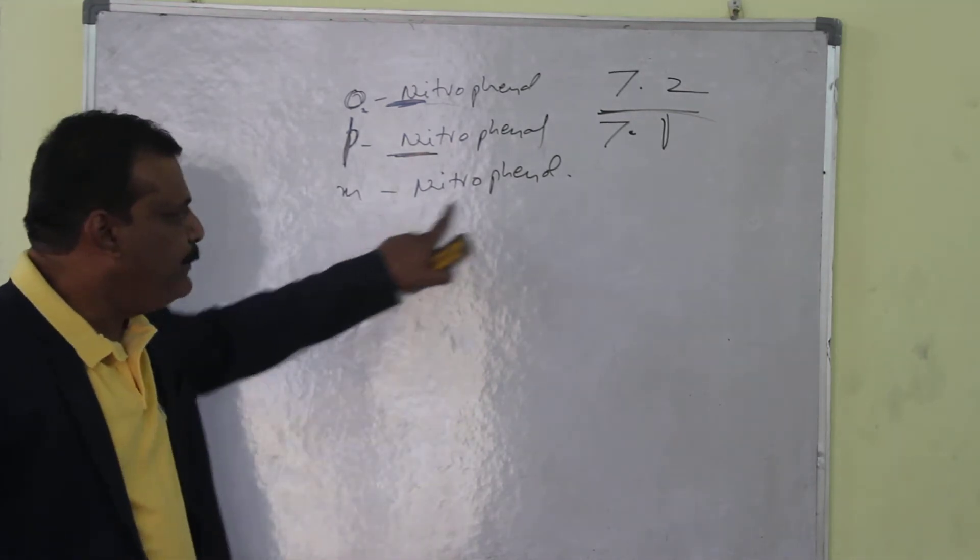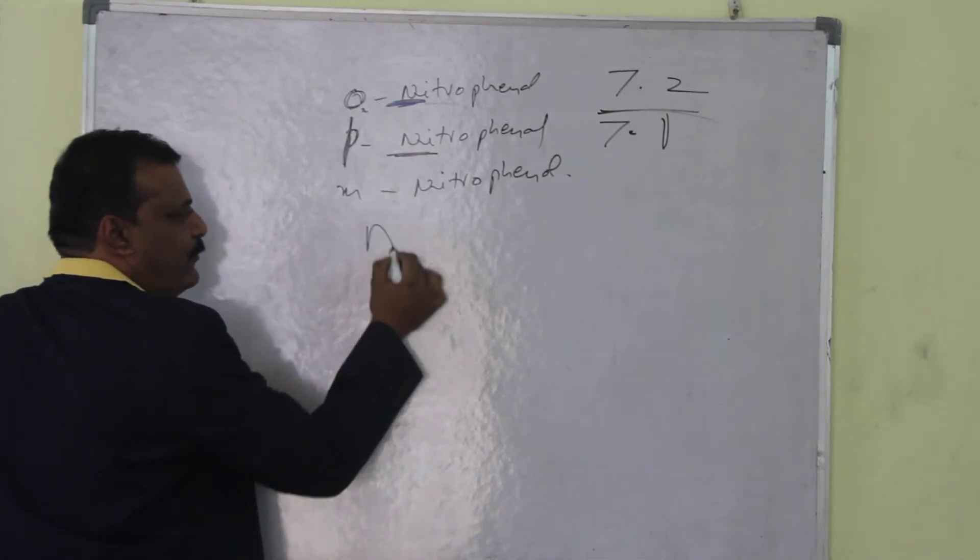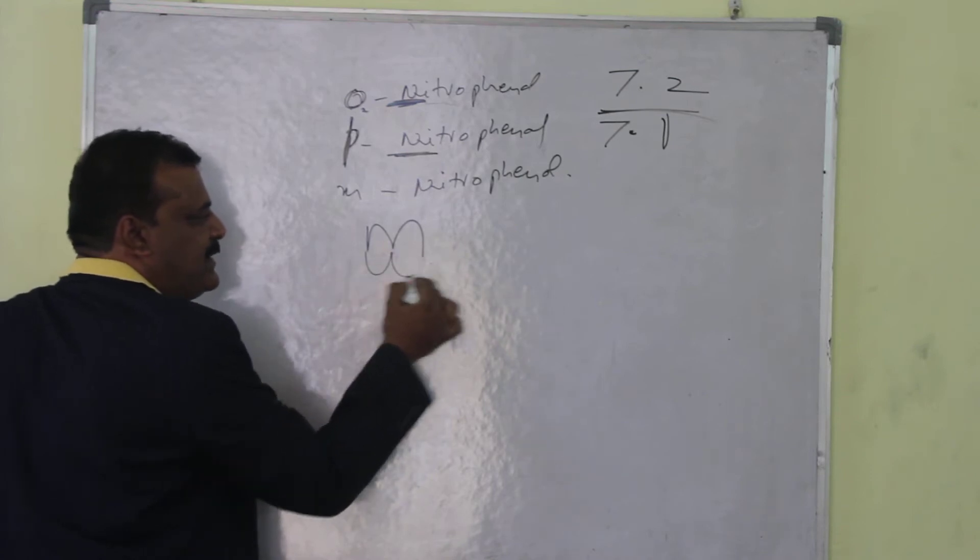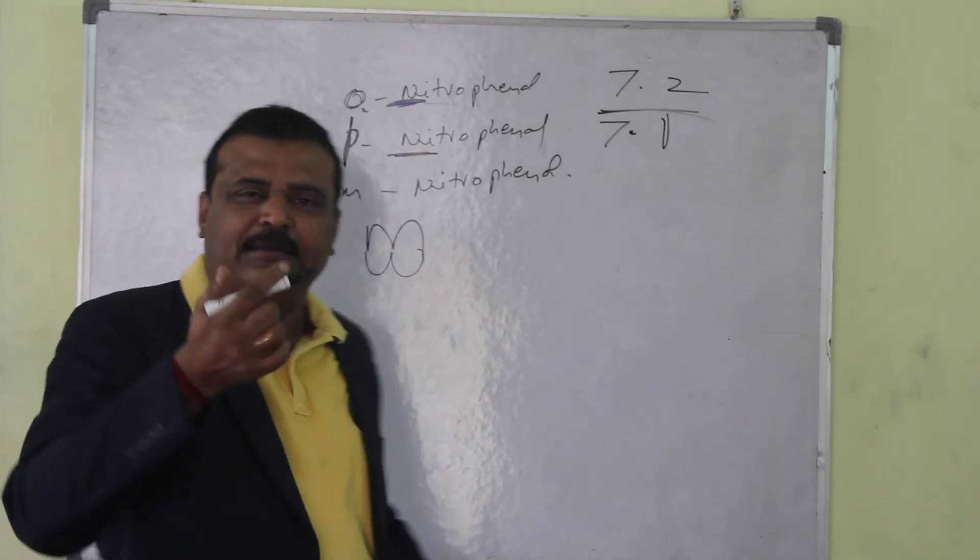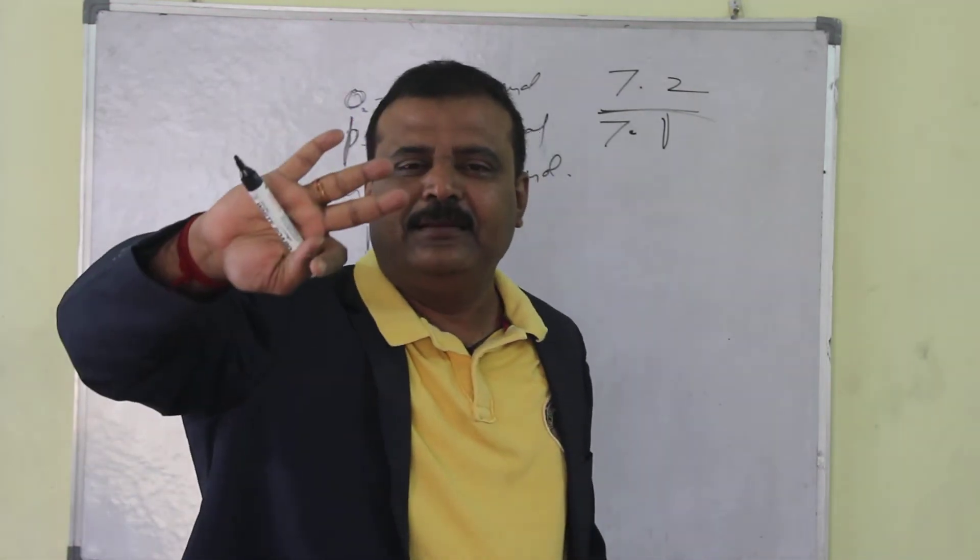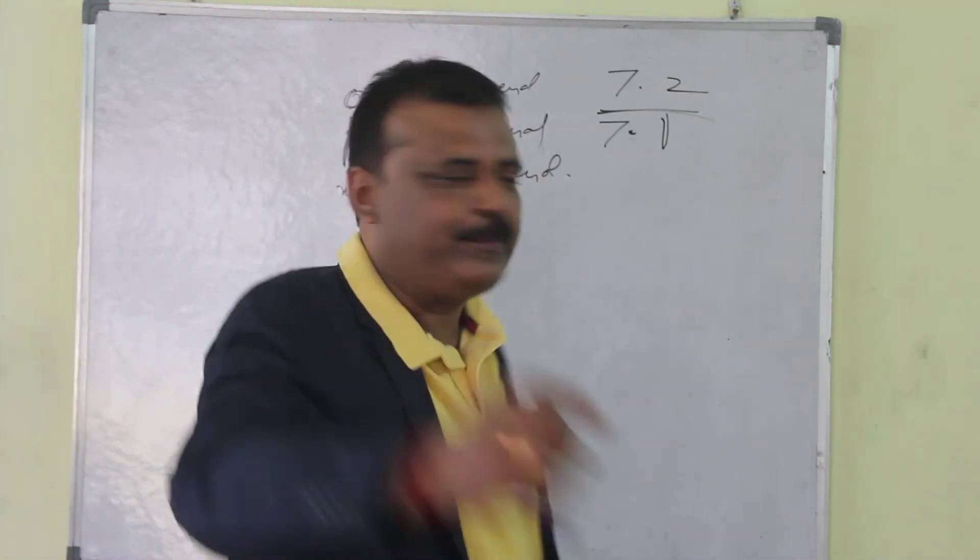And in case of meta nitrophenol, see this is meta nitrophenol, M. If I write like this it becomes 8, right? Which one I have added? Flip it to 3. I have added 3, that became 8, so that is 8.3.